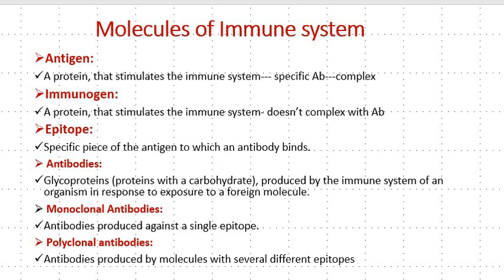Now let's talk about the molecules of the immune system. An antigen is a substance, usually a protein, that stimulates the immune system to produce specific antibodies and combines with an antibody specific to itself. An immunogen is similar but differs in that it elicits a cellular immune response and antibody production yet does not complex with an antibody — it mainly elicits a cell response. An epitope is a specific segment of the antigen to which an antibody binds.